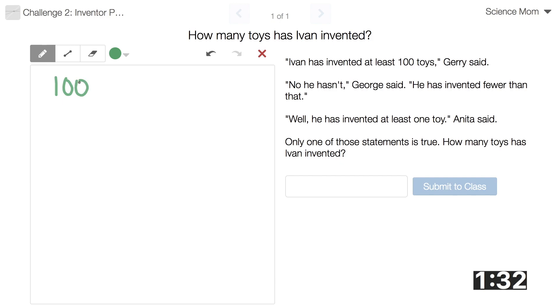All right, so we have three statements. We have 100 toys and maybe more, so I'm going to write 100 toys plus maybe more. And we have less than 100 toys, and we have at least one but maybe more.